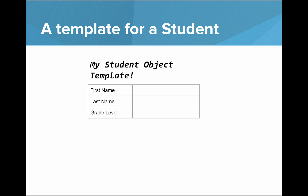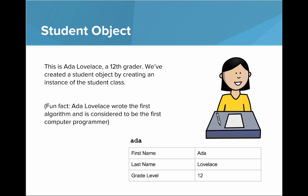And let's say we now want to think about a different class. Here we have a template for thinking about a student. Every student has a first name, a last name, and a grade level. So here, we have a student. We have a student object. This is Ada Lovelace, a 12th grader. We've created a student object here by creating an instance of the student class. You can see Ada in our box below has a first name Ada, last name Lovelace, and grade level 12.